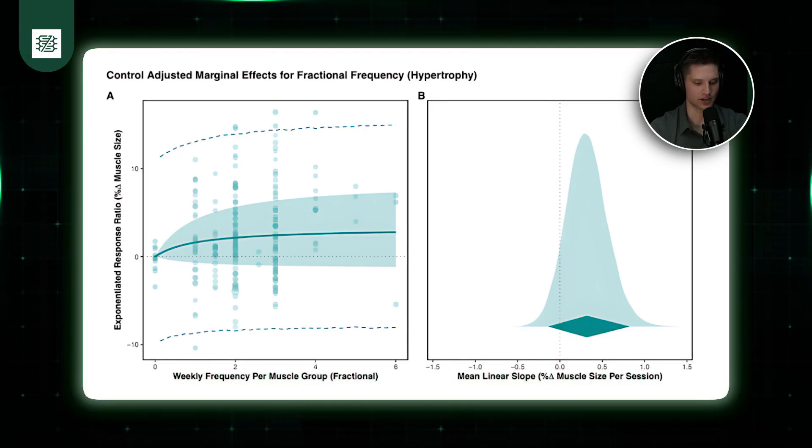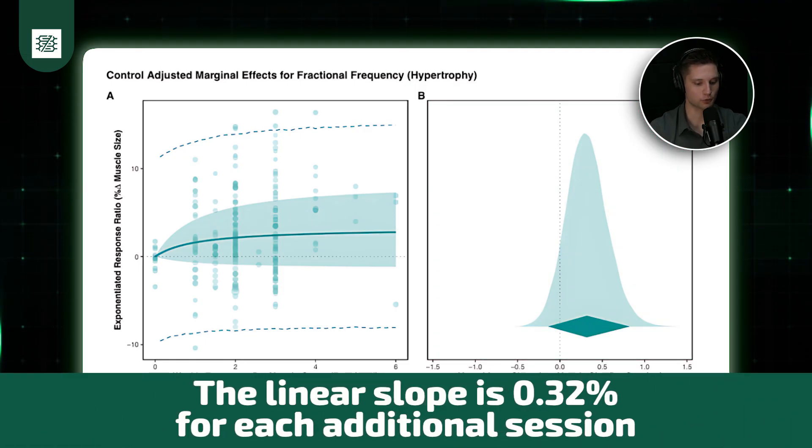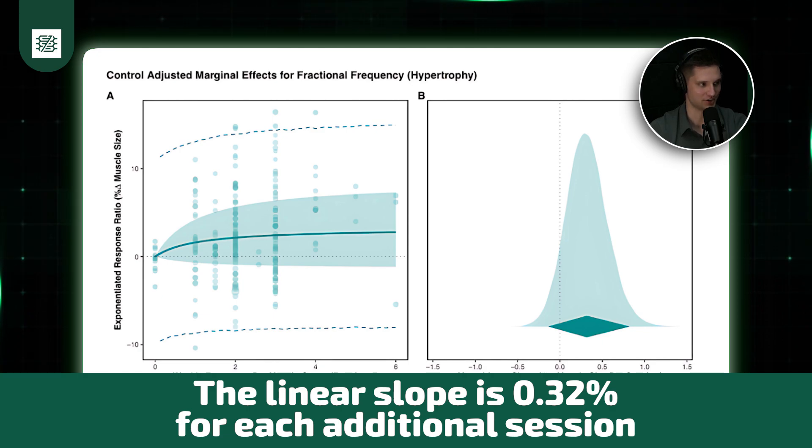The average frequency was right around two sessions per week. So if you were to basically say, what is the linear slope at about two sessions per week, that is basically what you see in Panel B. So that linear slope is 0.32% for each additional session.